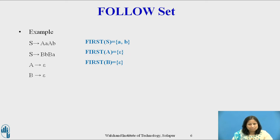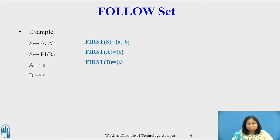Consider the third grammar with the productions: S derives A a A b or B b B a, A derives epsilon, and B derives epsilon. The first set for this grammar, computed in the previous video, is given on the slide. We put dollar in the follow of S by Rule 1. Hence, follow(S) equals {dollar}.